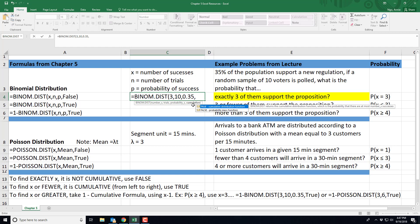And then it's going to ask us, are you looking for the cumulative probability? Since we're looking for an exact number, we are not looking for the cumulative distribution function. So you'll type in false. We are looking for an exact value.